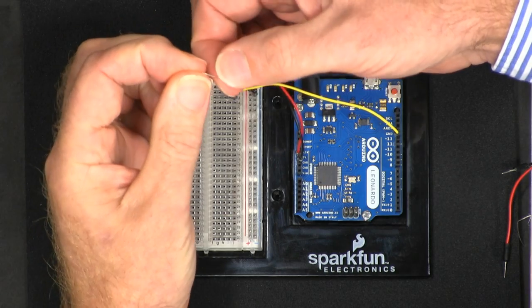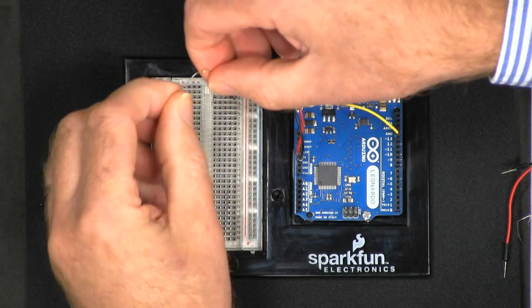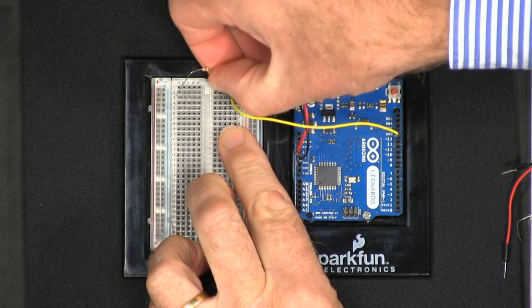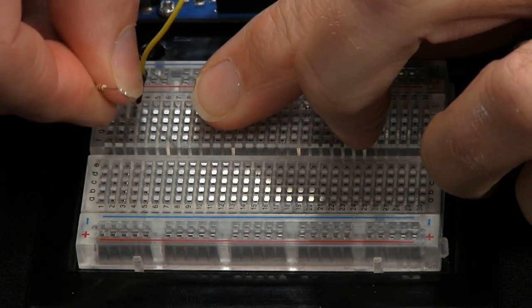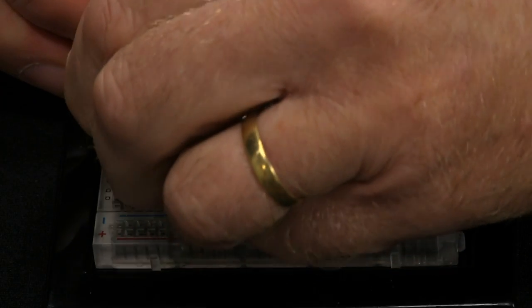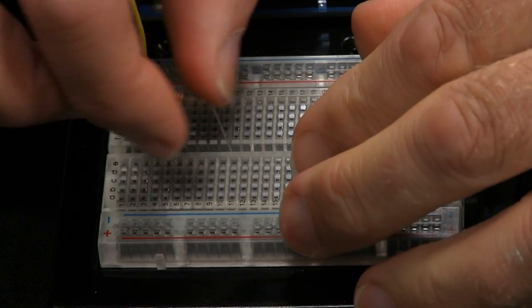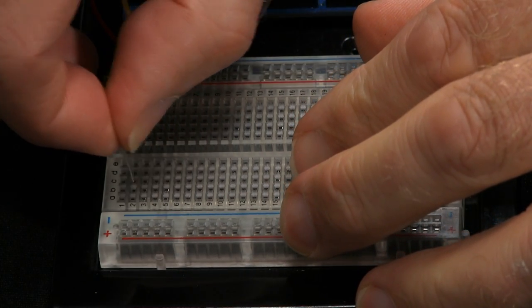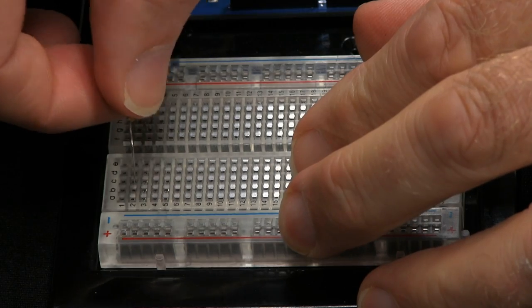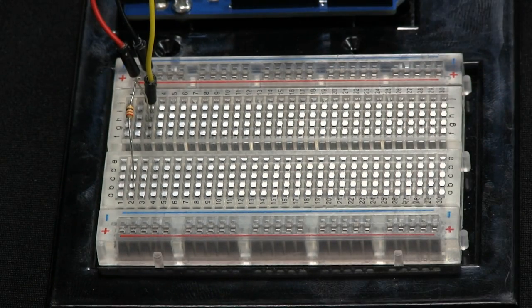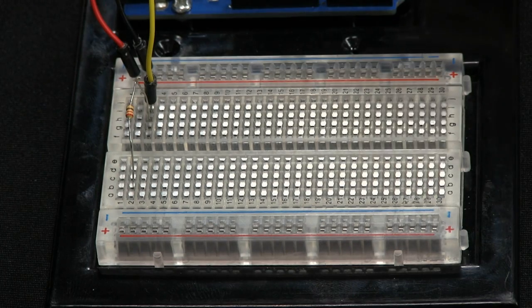We then have to take that through a current limiting resistor which we mentioned earlier of 220 ohms. So these have very small legs, so we put that in there and the other end in there, and then we'll connect our LED to the end of it.